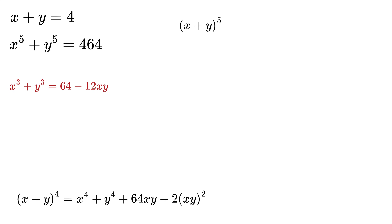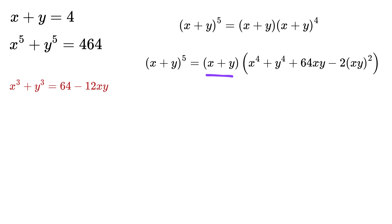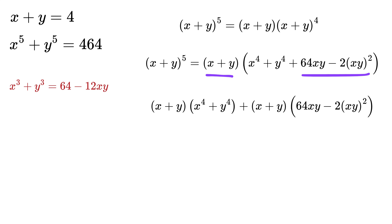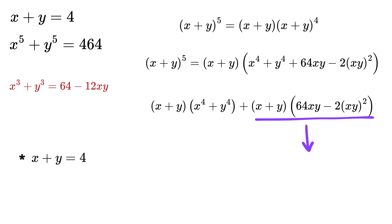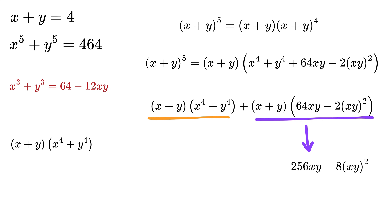Now we are ready to expand (x+y)⁵, rewritten as (x+y) times (x+y)⁴. Substituting (x+y)⁴ from our previous result, we take (x+y) and multiply it through. For the easier part, substituting x+y equals 4, we get 4 times (64xy minus 2(xy)²), which equals 256xy minus 8(xy)².